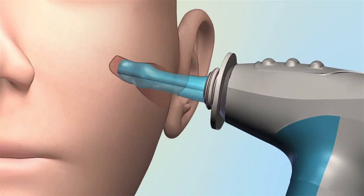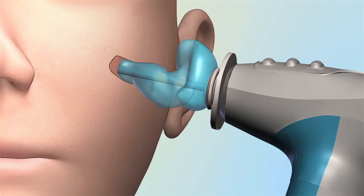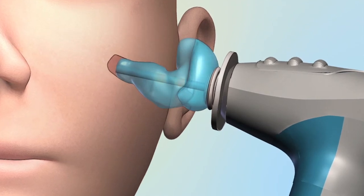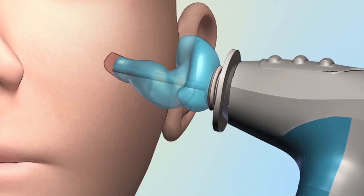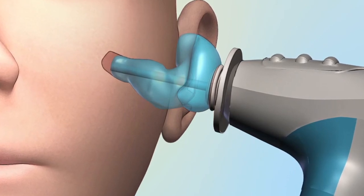Once positioned, the membrane is filled with a water-based optical dye. This liquid expands the membrane until it conforms precisely to the patient's unique ear geometry.